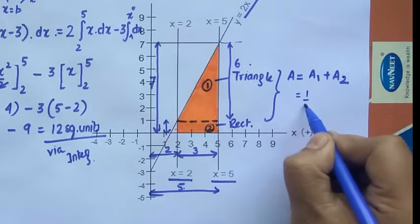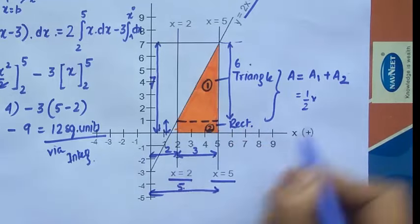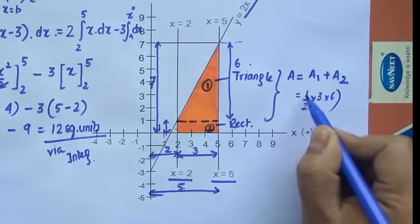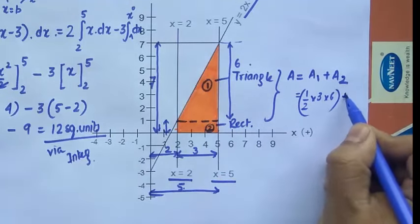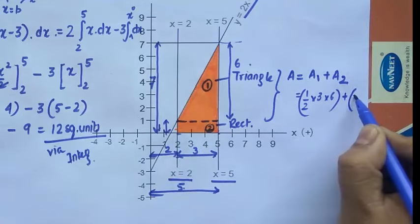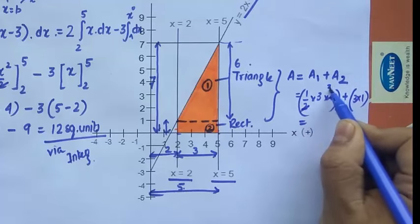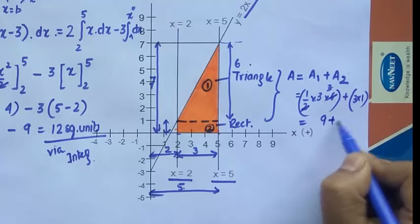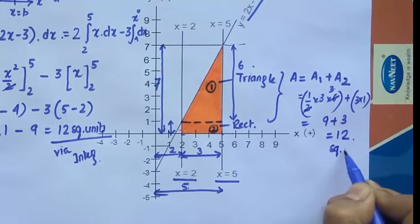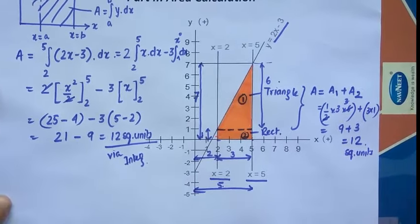Area of triangle (A1) equals half times base times height, which is half times 3 times 6 equals 9. Area of rectangle (A2) equals base times height, which is 3 times 1 equals 3. Total area equals A1 plus A2 equals 9 plus 3 equals 12 square units. This matches our integration result of 12 square units perfectly.